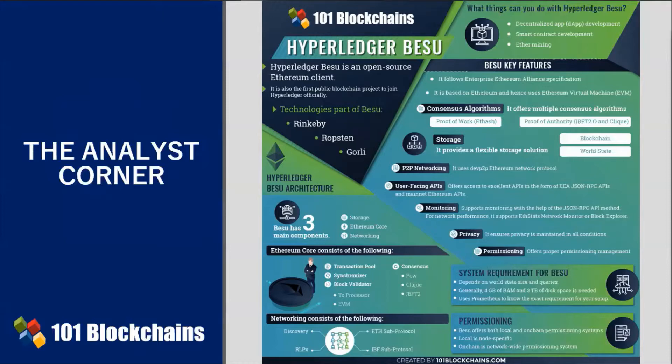The Hyperledger Besu network is designed for enterprise needs, privacy, and permissioning, most of all. It implements the Enterprise Ethereum Alliance specification, which ensures that it can connect with other Ethereum projects, avoiding vendor lock-in issues.